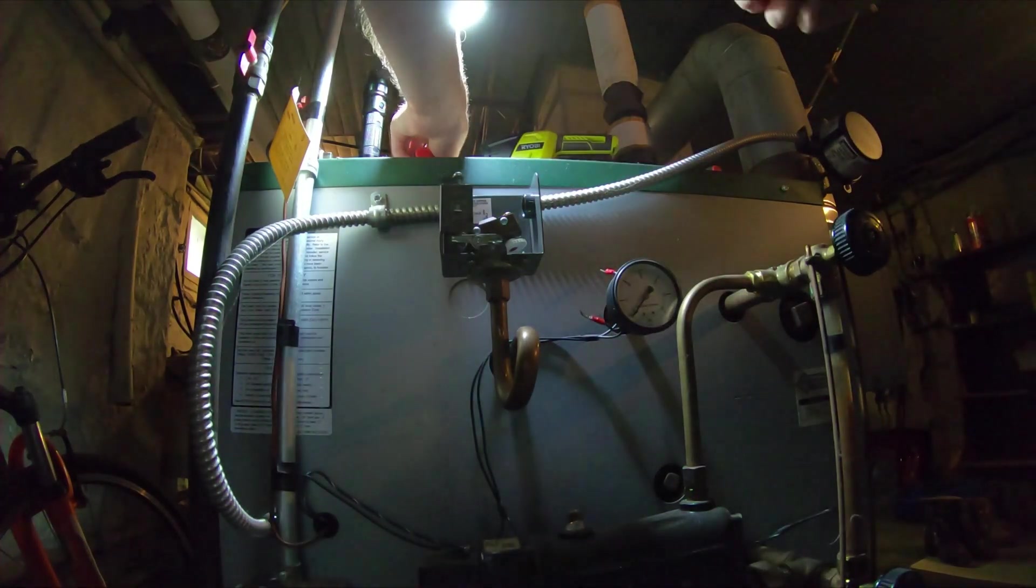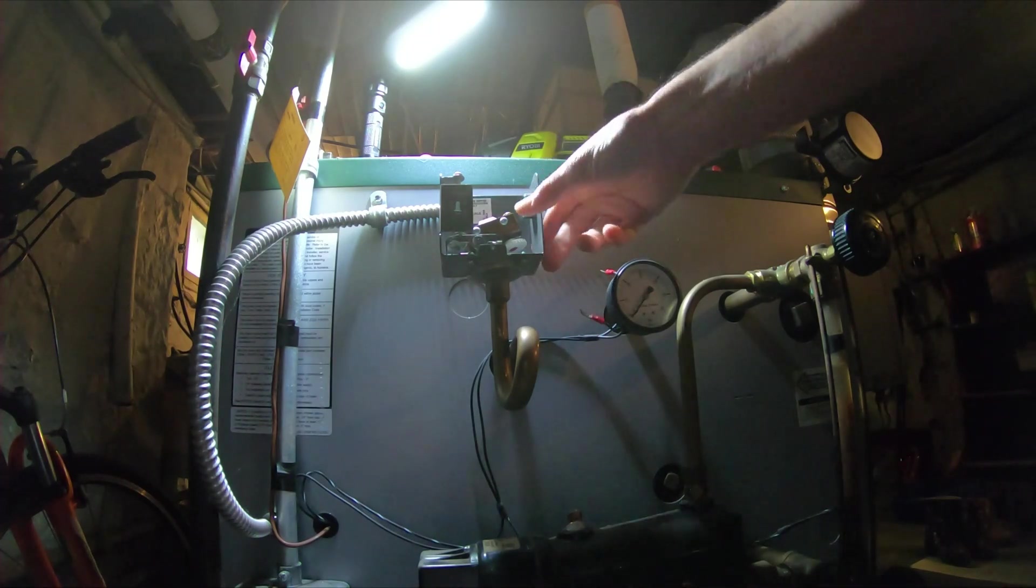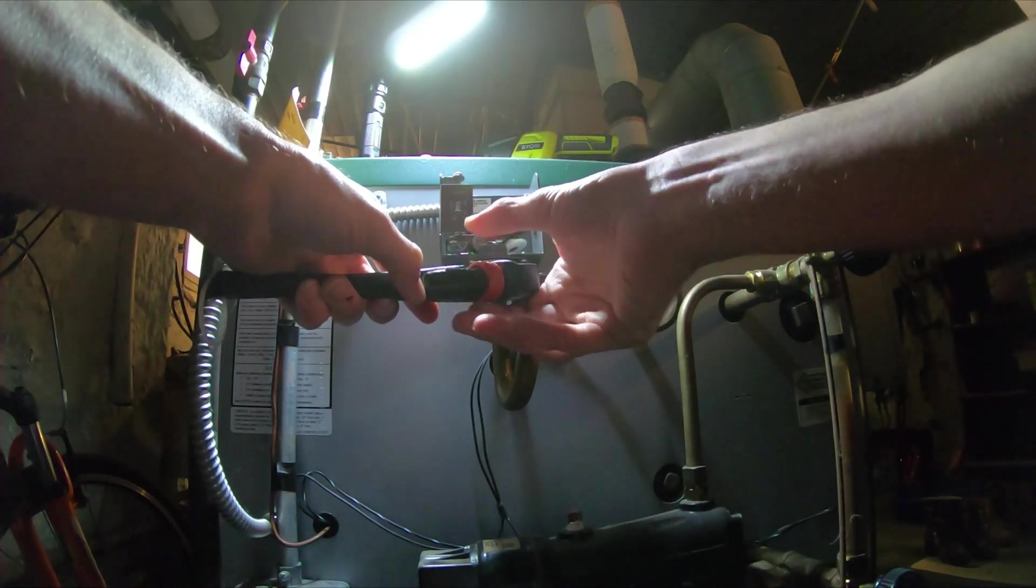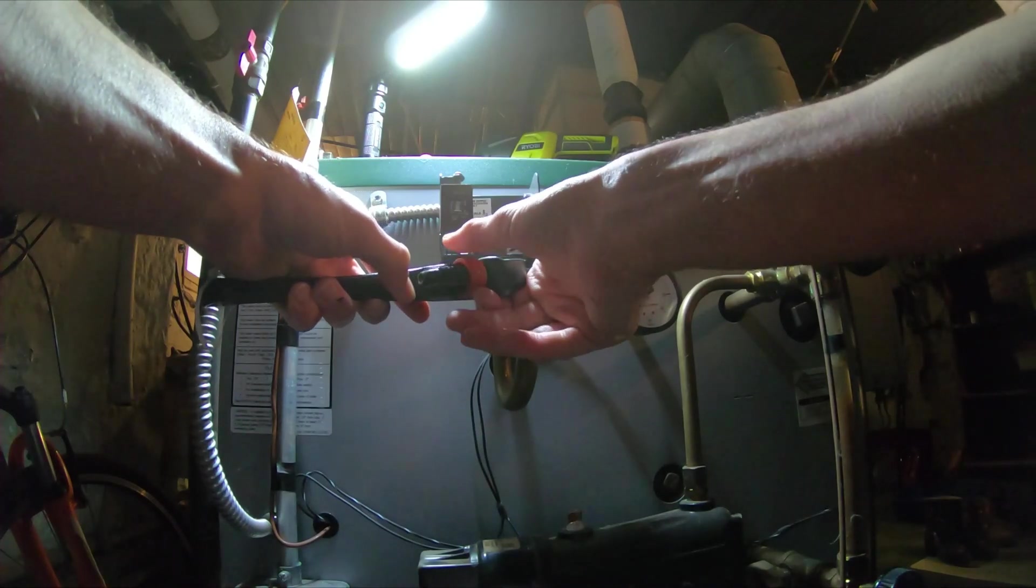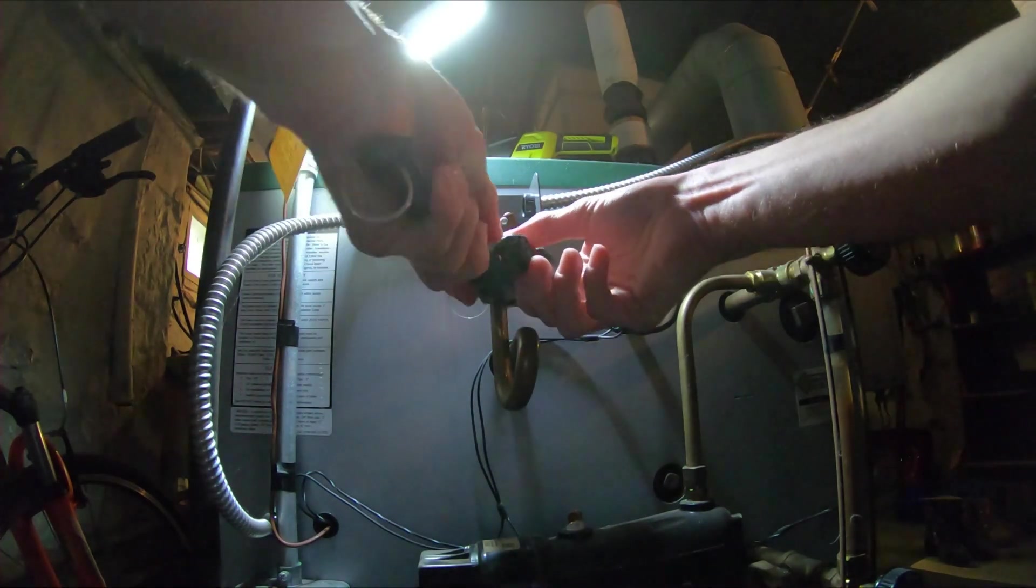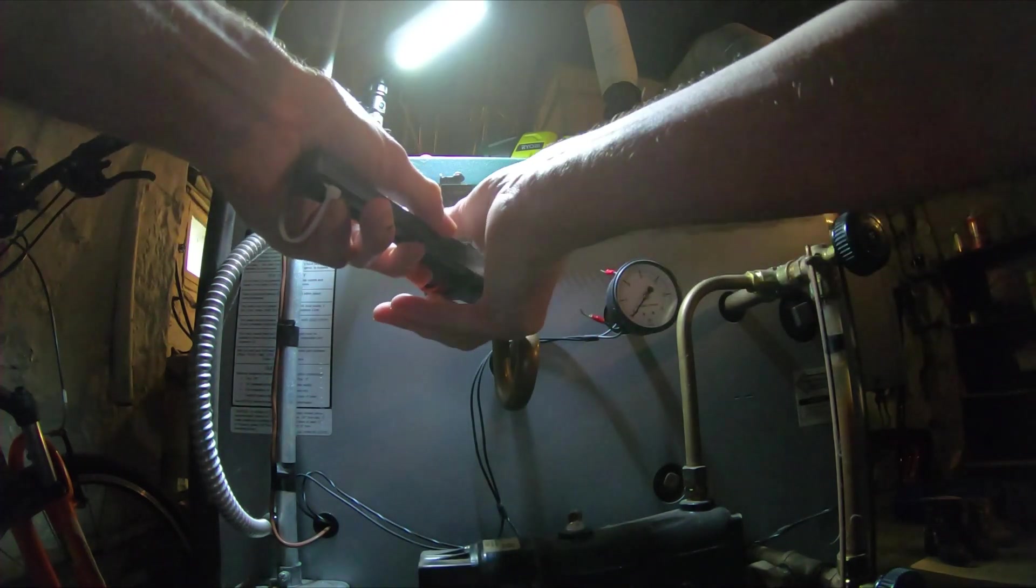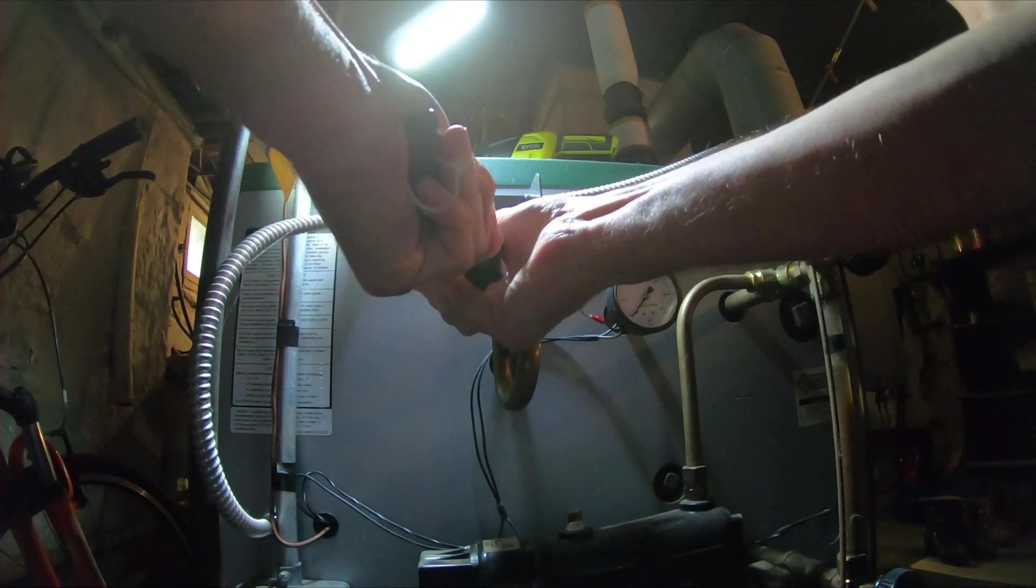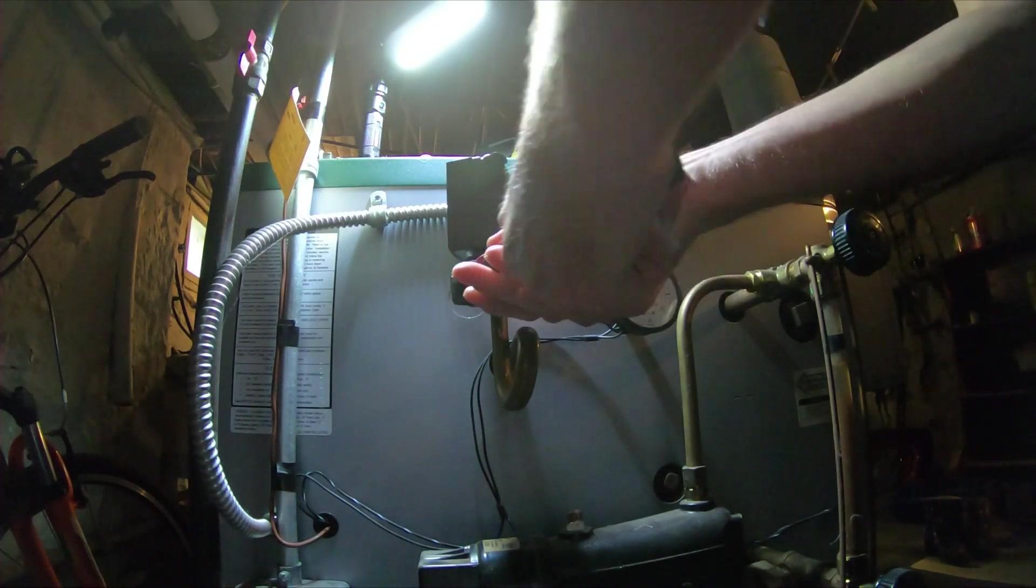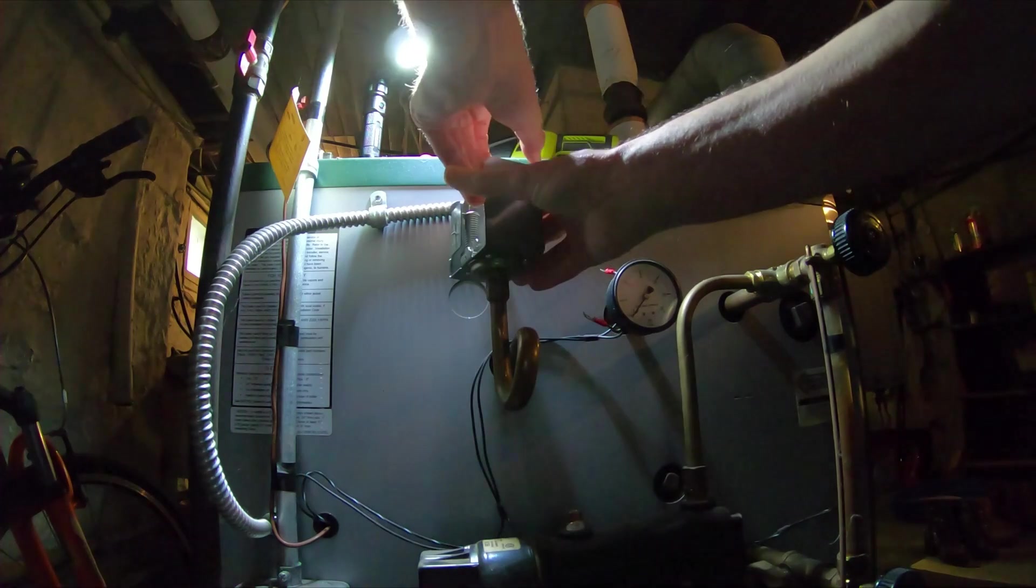Now I'll take a small pipe wrench and we'll take this whole pressure switch box right off. It's not very hard to get off, fairly simple. I'll turn the wrench around the other way because it seems to be slipping a little bit here. We'll just twist the whole thing right off.